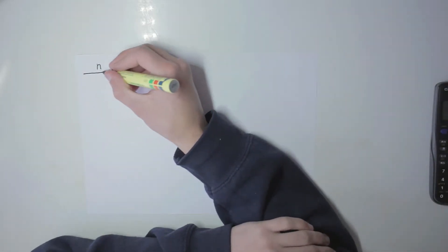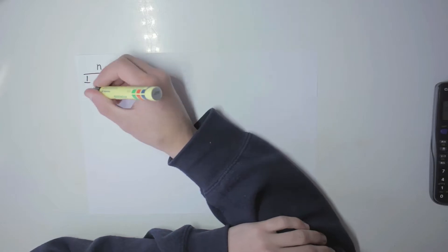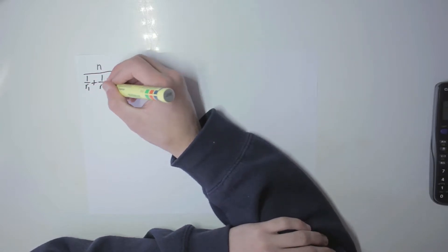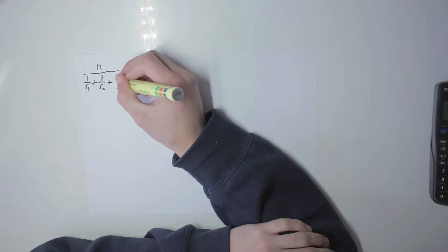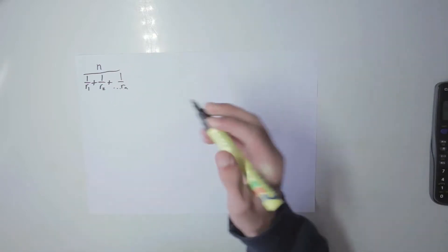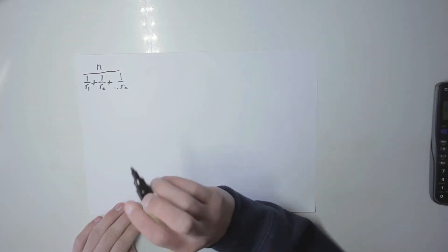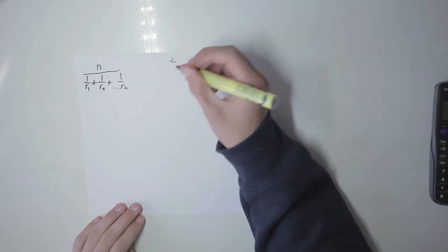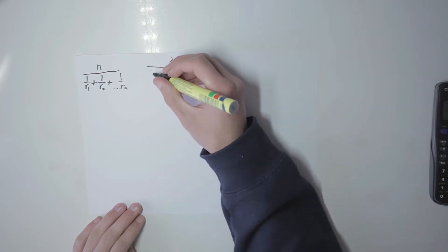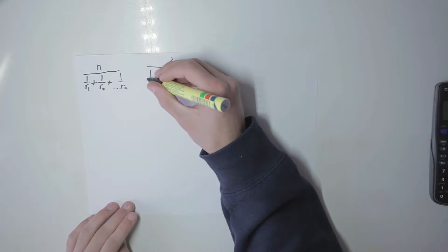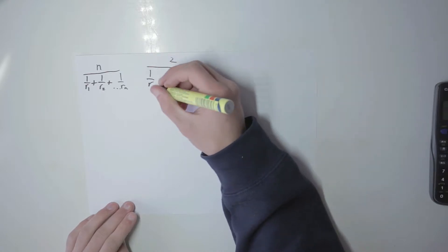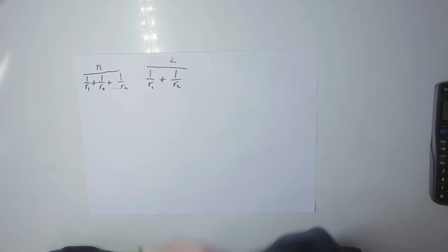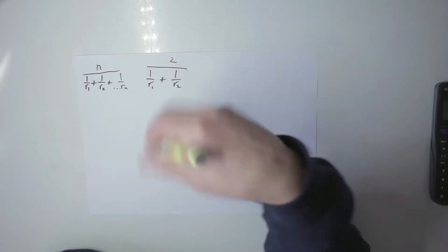Let's quickly start out by writing the generalized form of the formula: it's n divided by the sum of the reciprocal rates. That's the generalized form. I'll just quickly be dealing with the case when n is 2, and once we figure out that formula it will basically apply generally.